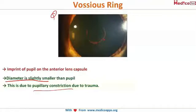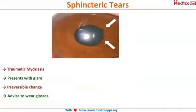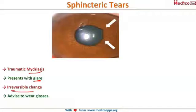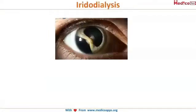The original size of the pupil is larger, but the ring is much smaller because the pupil constricts due to trauma. Sphincter tears cause traumatic mydriasis and the patient presents with glare. This is an irreversible change; all you can do is ask the patient to wear glasses to reduce the glare.